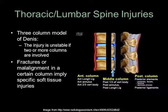Now we'll move on to thoracic and lumbar spine injuries very briefly. The three-column model of Denis is a famous model which divides the spine into three columns: the anterior column, the middle column, and the posterior column. The anterior column includes the anterior two-thirds of the vertebral body. The middle column includes the posterior one-third of the vertebral body. The posterior column includes the posterior elements. The injury is considered unstable if two or more of these columns are involved.